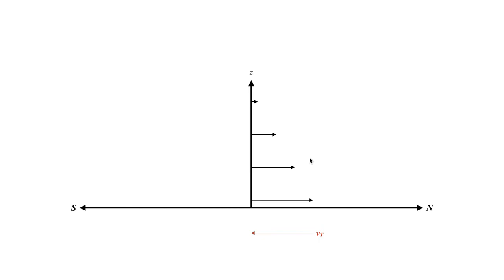That is not to say you can't have a strong low-level jet during the daytime. In fact, those severe weather events can be particularly scary because they can happen while daycare is running, children are in school, and many people are at work. So if you get a strong low-level jet in the middle of the day, that can be a really scary scenario. But the natural tendency is for the low-level jet to be weakest during the daytime — as with anything in the atmosphere, there are exceptions to the rule.